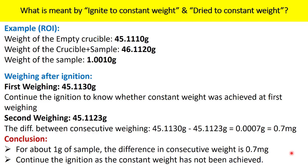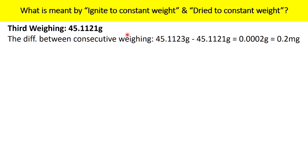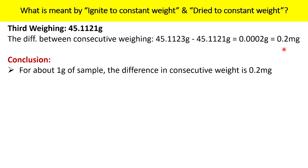So you again ignite the crucible at 800 degrees Celsius for one hour according to your test procedure, cool it in a desiccator, and take a third weighing. Let us assume the third weighing is 45.1121 gram. Now calculate the difference between the second and third weighings. You will find it is 0.0002 gram, or 0.2 milligram. The conclusion is: for about 1 gram of sample, the difference in consecutive weights is 0.2 milligram, which is less than 0.5 milligram per gram — so constant weight has been achieved.